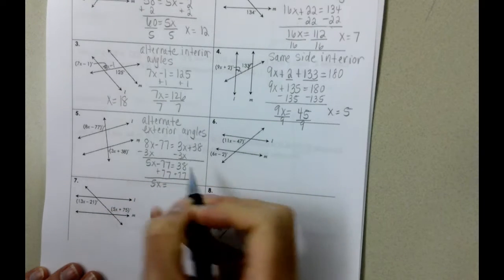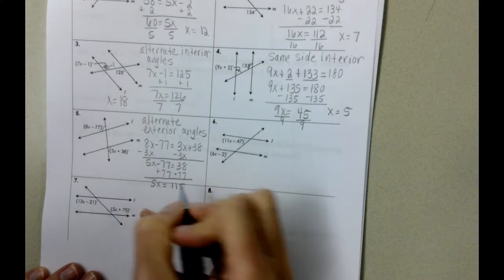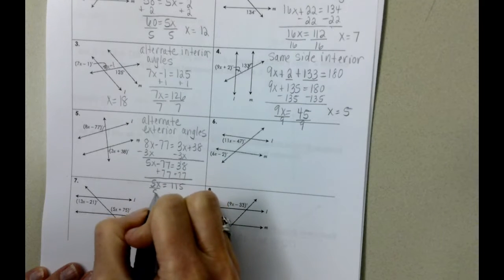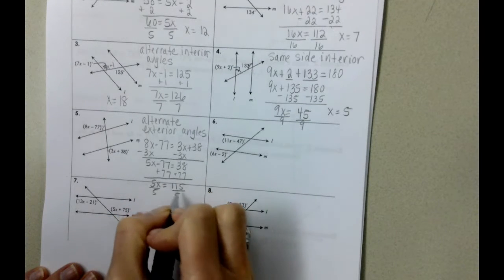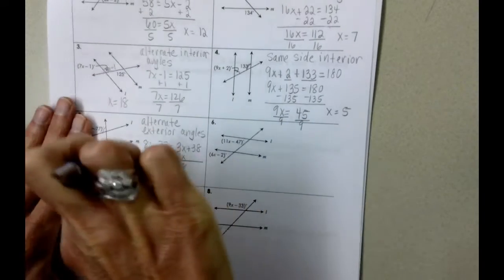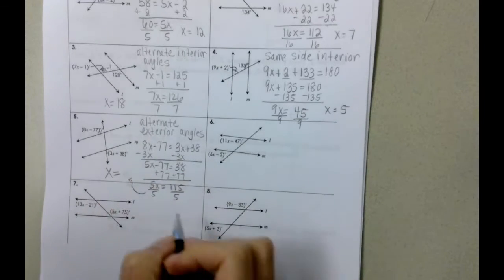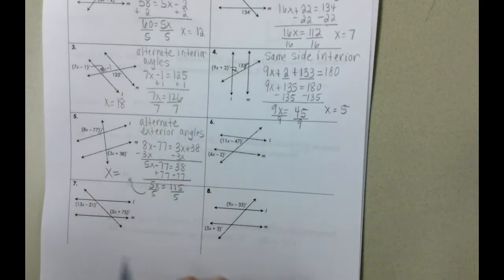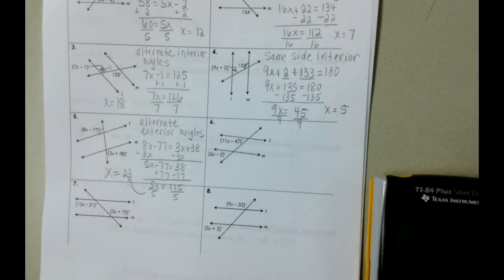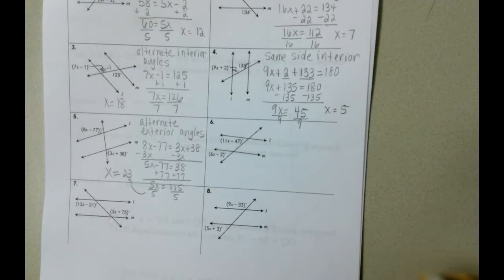And we get 5X equals 115. 8 and 7 is 15. And divide both sides by 5. So we're going to end up with X equals—I need my space here—I think 23. I'm going to check it real quick. 115 divided by 5. Yes, 23.